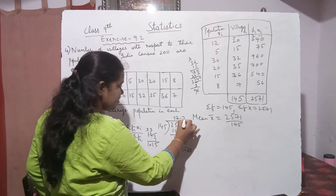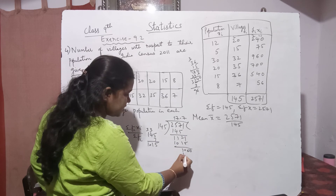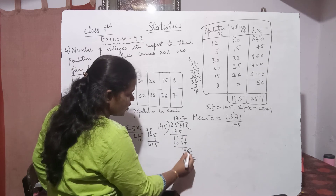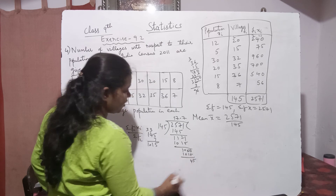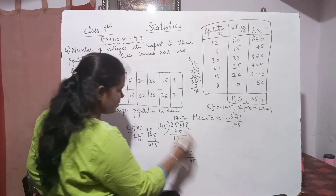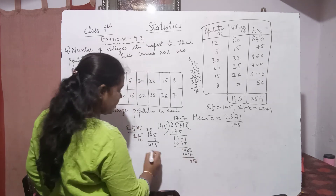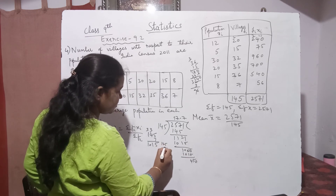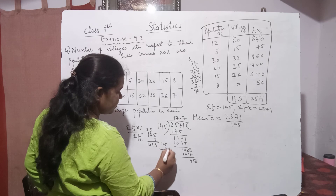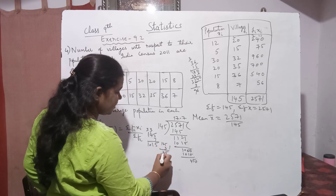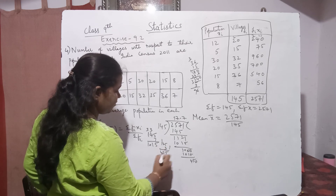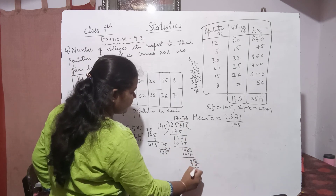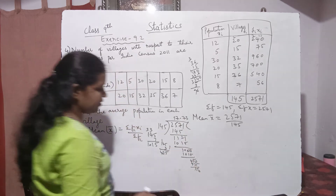Bring down another zero: 450. Check 145 × 3 = 435. 450 − 435 = 15. So the division continues giving us the decimal result. Putting it together, we get 17.73.